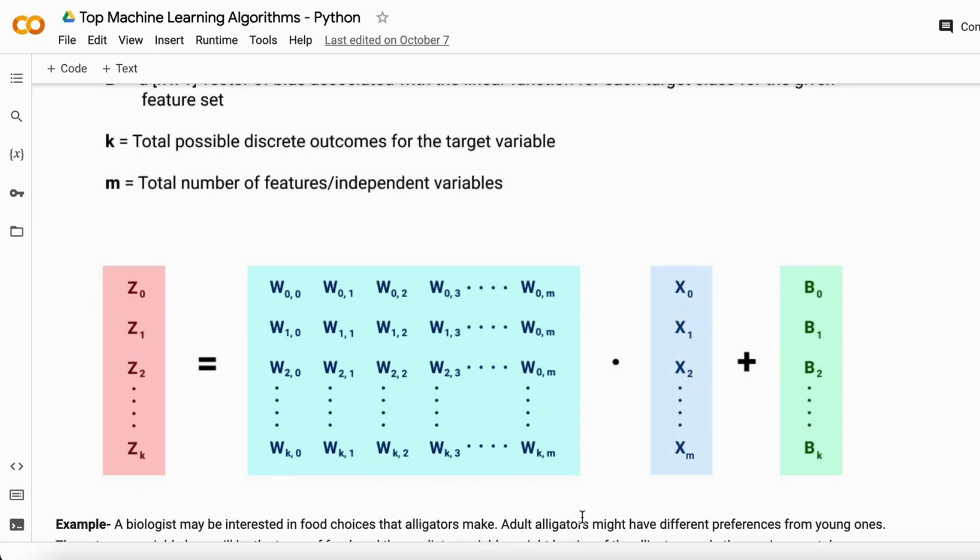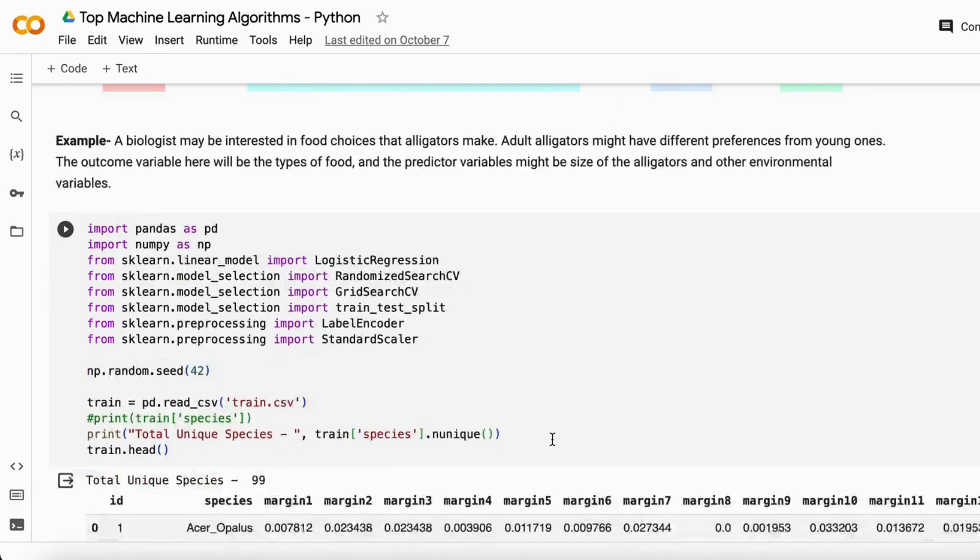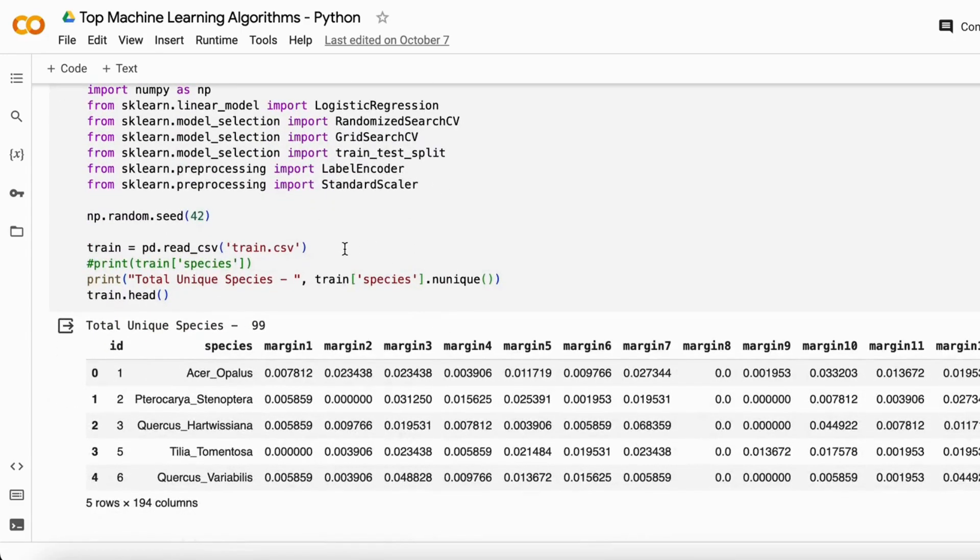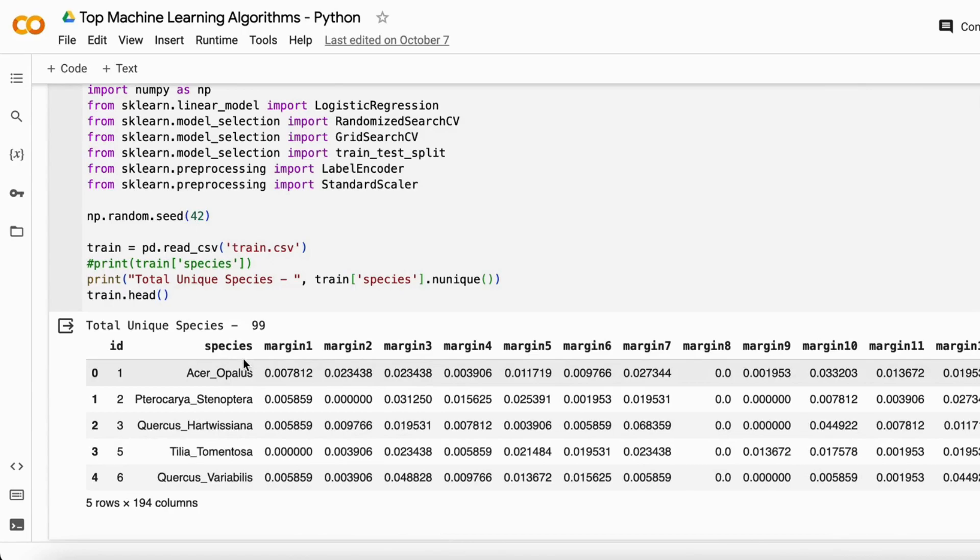Let me give you an example. We have a dataset of alligator food choices and you want to predict the species of the alligator based on the food choices. We import all the libraries, then get the dataset here. It has so many columns, and you want to predict this species column. It has 99 unique species, so you will see it has 99 labels in your target variable. This model will predict for all the species, not just two.